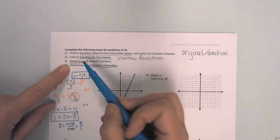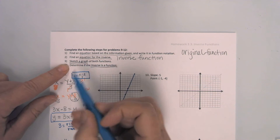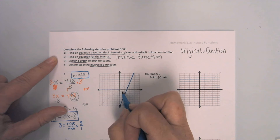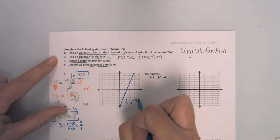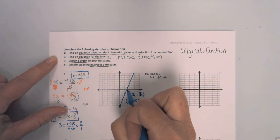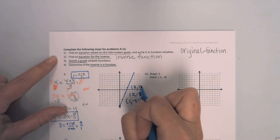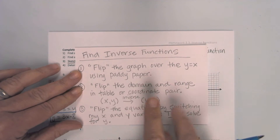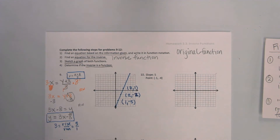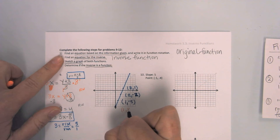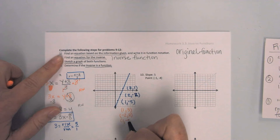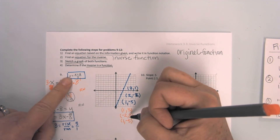Now I have two choices. I've sketched one function but I have not sketched the other one. I could make a table, but I notice I already have points. I have a point at one, negative five; a point at two, negative two; and a point at three, one. I remember all I have to do is flip my domain and range to get my new coordinates. So my inverse function will have one comma three, negative two comma two, and negative five comma one. That was a lot easier than solving the equation within a table.